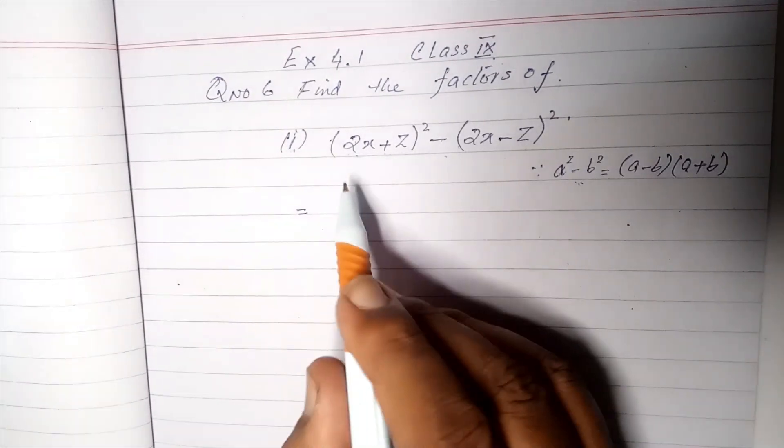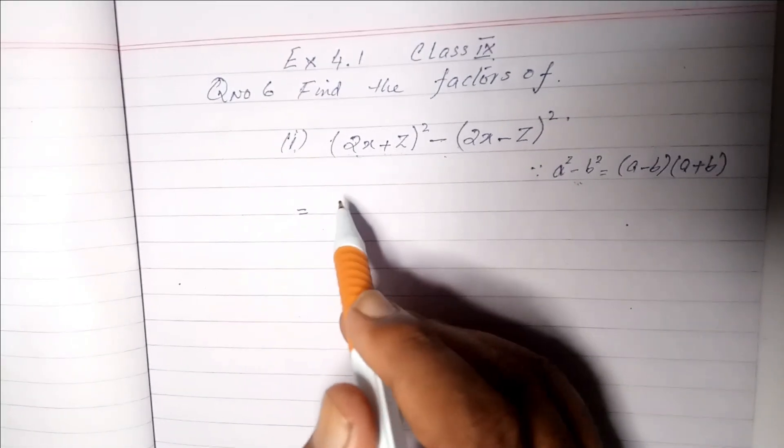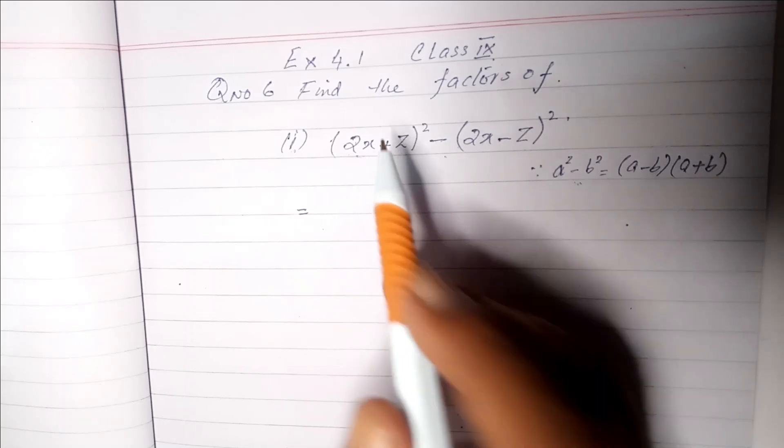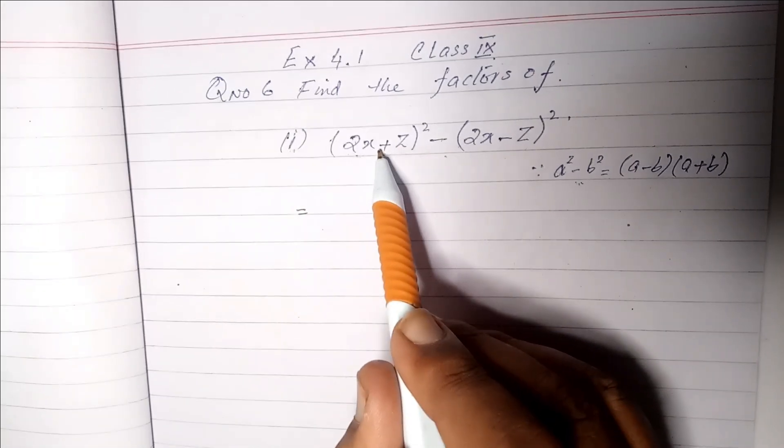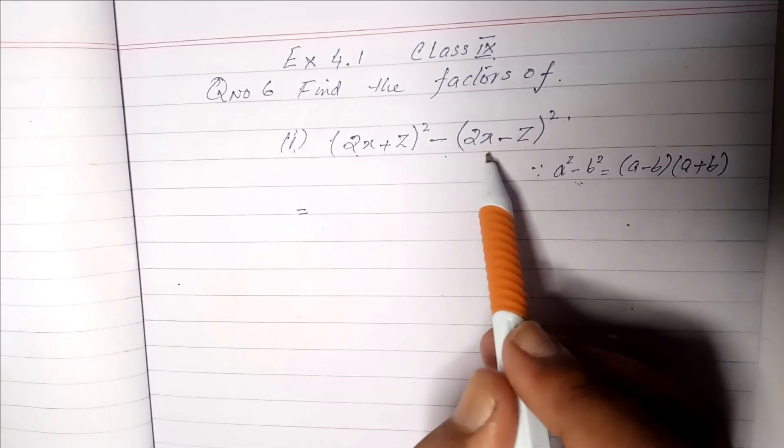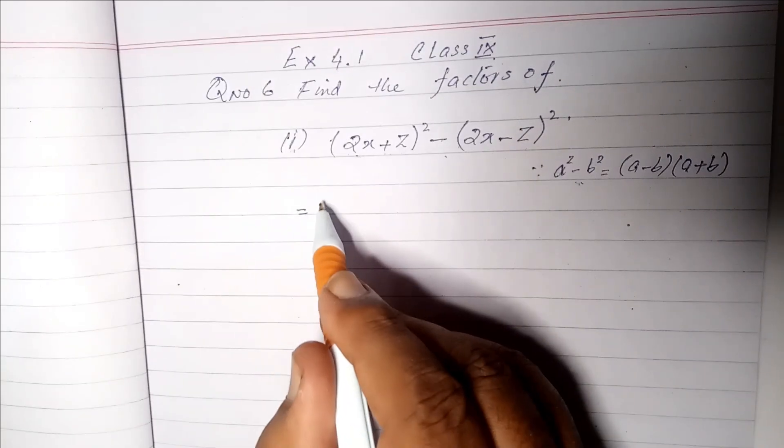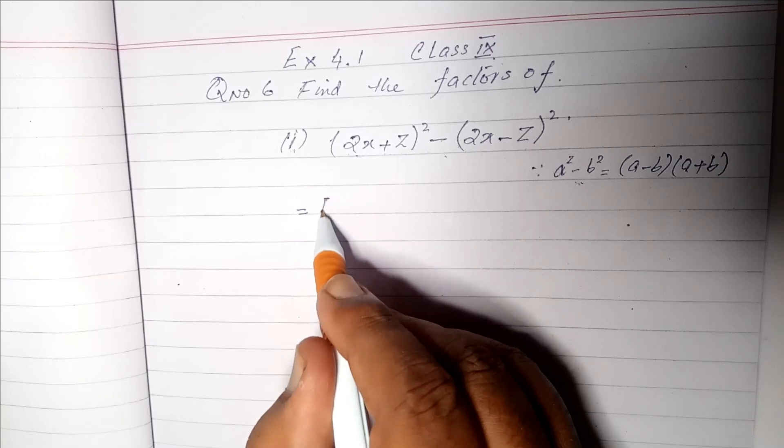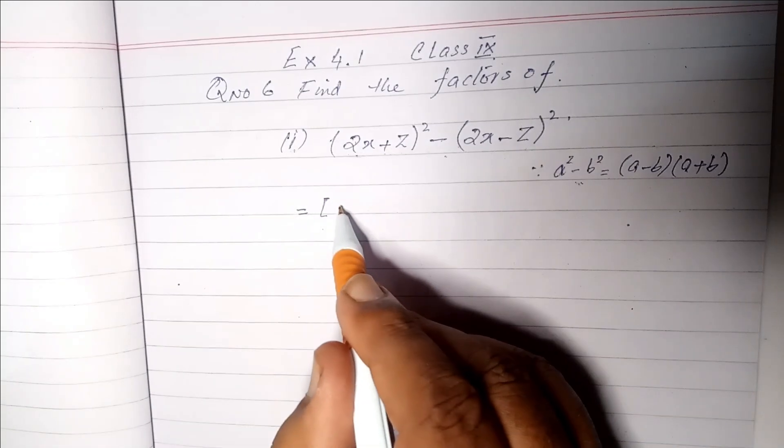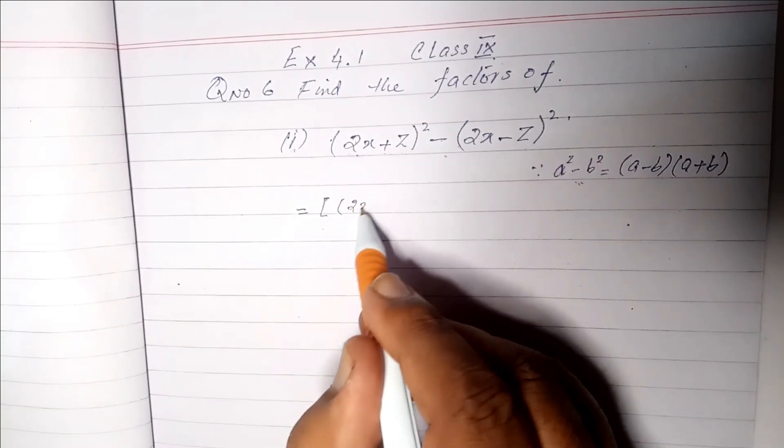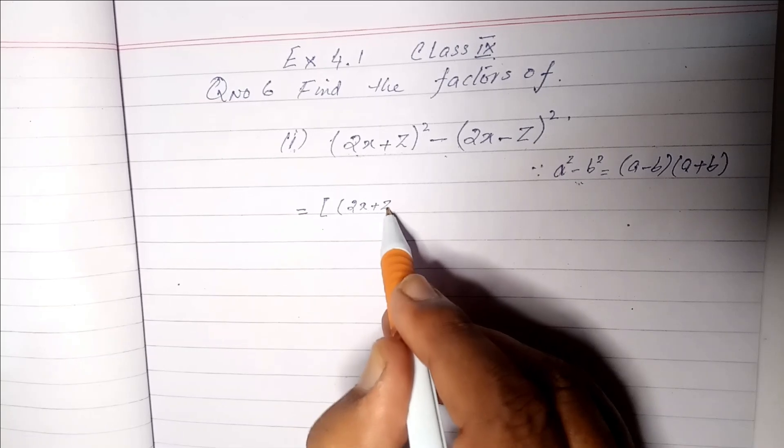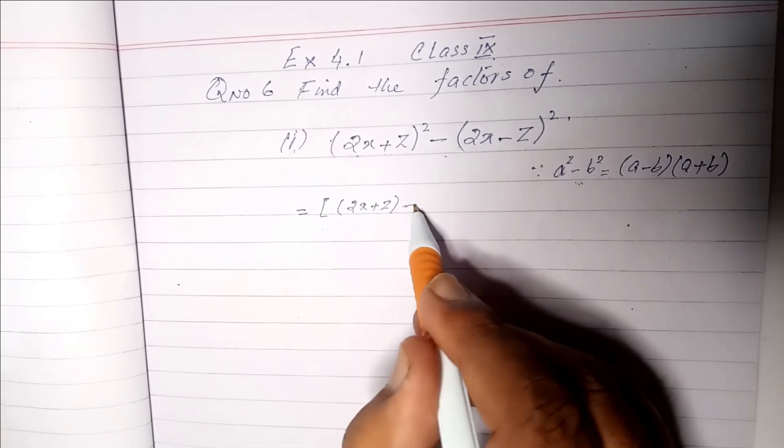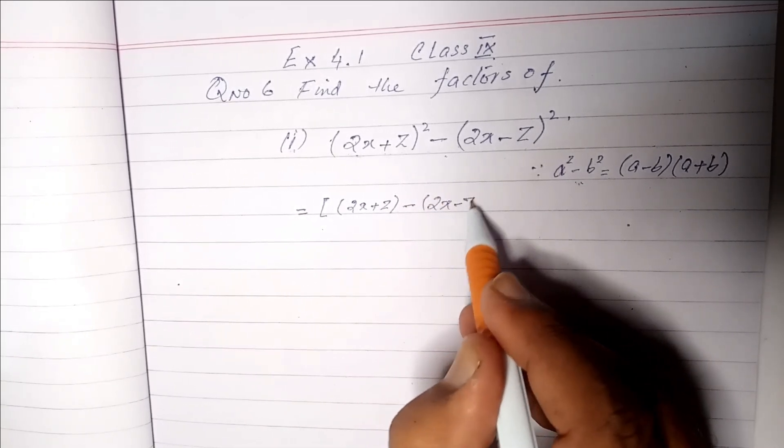So now we will solve this whole value and this whole value. We will write it in minus and then we will write it in plus. We will write it in a square bracket and here we will write 2x+z minus (2x-z).